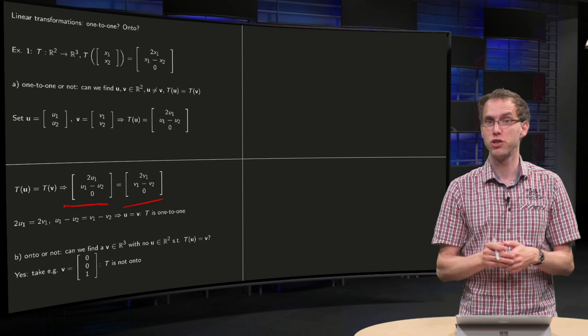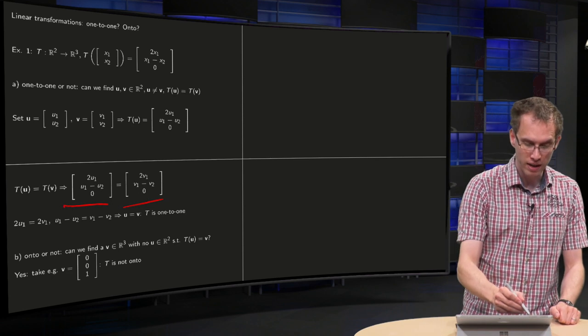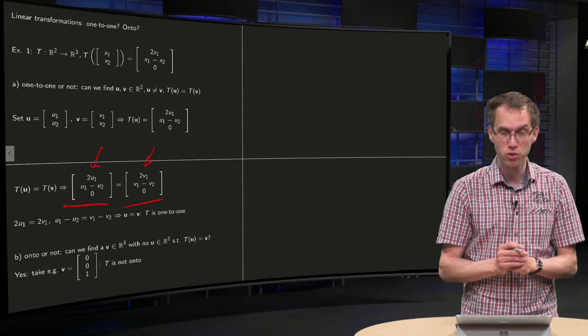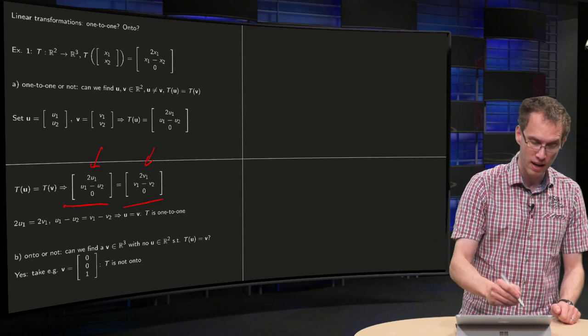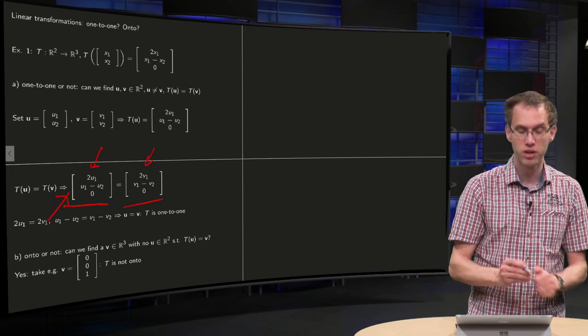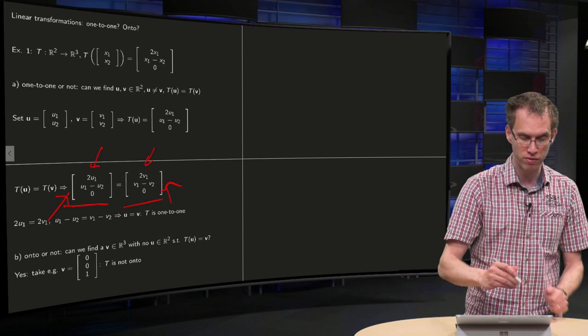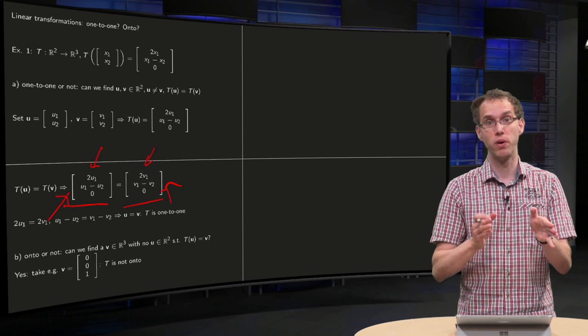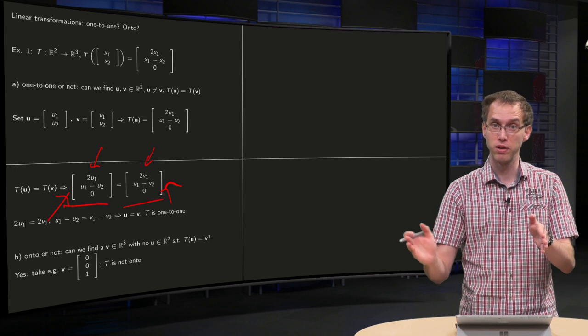The first component gives us 2u₁ equals 2v₁, so u₁ has to be equal to v₁. The second component gives us u₁ minus u₂ equals v₁ minus v₂.